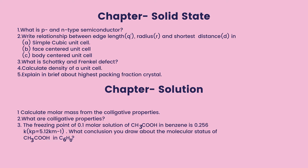Chapter: Solutions. Calculate the molar mass from the colligative properties. What are the colligative properties? The freezing point of a 0.1 molar solution of acetic acid in benzene is 0.256 K. What conclusion do you draw about the molecular status of acetic acid in C₆H₆?